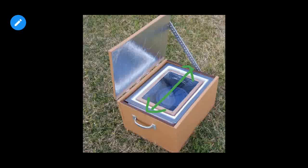When the rays enter this box, the purpose of the glass is that the heat should not escape from the box. This glass lid helps to trap the heat inside the solar cooker.